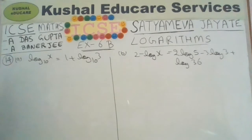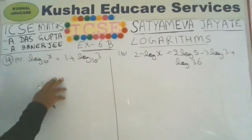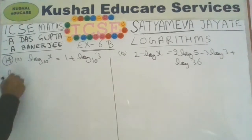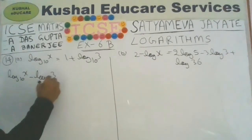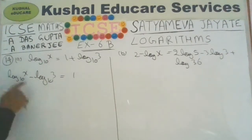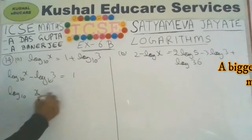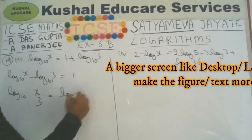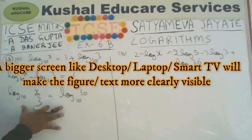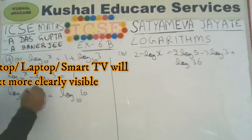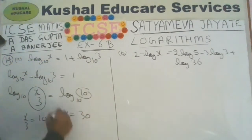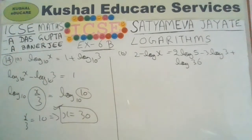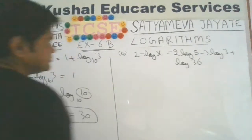Now we solve for x. Write log x base 10, transfer log 3 base 10 to the left. Log x minus log 3 equals 1. The subtraction means division: log of x upon 3 equals 1. This 1 can be written as log 10 base 10. Since the two logs are equal, x upon 3 must equal 10, so x equals 30.